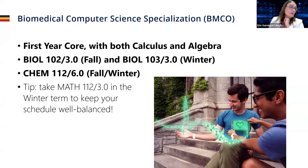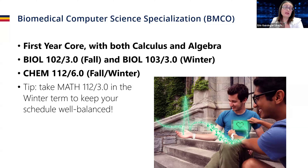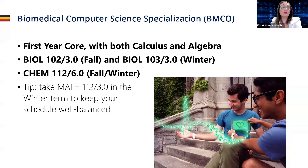For the biomedical computer science specialization, you take the standard core courses and calculus and algebra. However, with this one you're also going to want to take Biology 102 and 103, and Chem 112, which is a full year course. Taking Math 112 in the winter term can help keep your schedule more balanced.